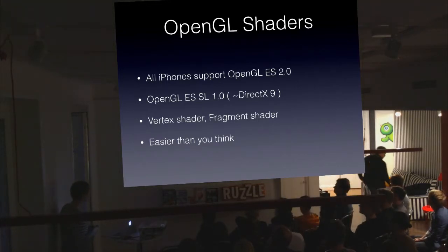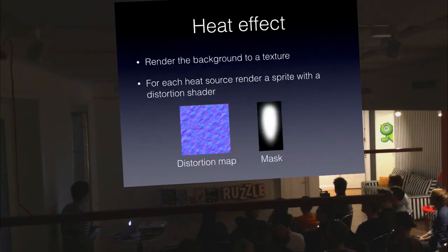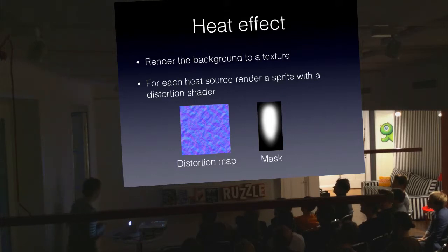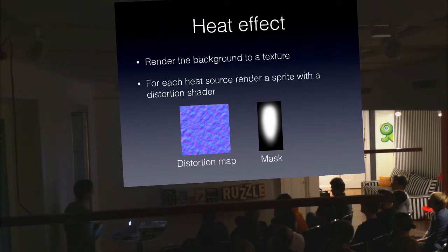We're going to use OpenGL ES Shading Language 1.0, which is available for every iPhone except the first one. For this heat effect, we're going to distort the image using a distortion map that skews the texture coordinates for each pixel — that's the one in the bottom left. It's actually a normal map, but we're just using the X and Y components. We also use a mask so the effect doesn't create a sharp edge around the square sprite behind the missile.